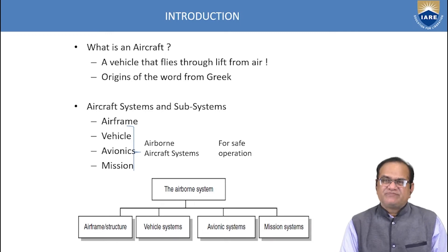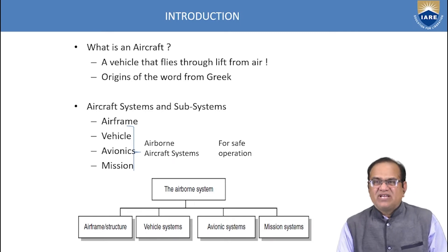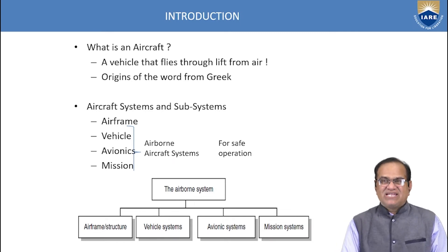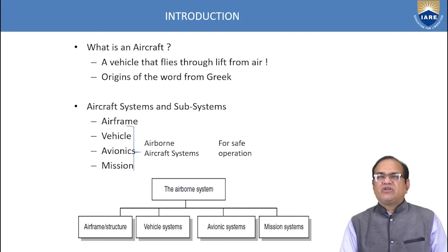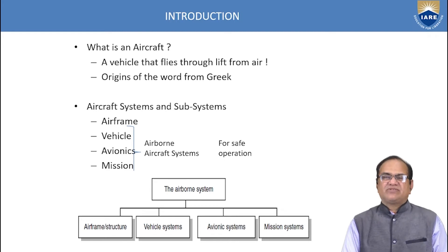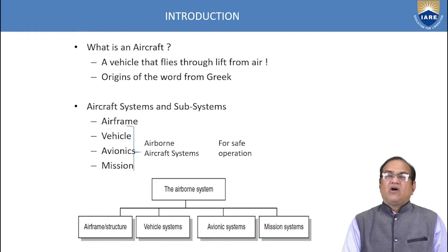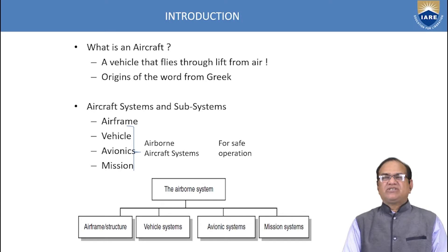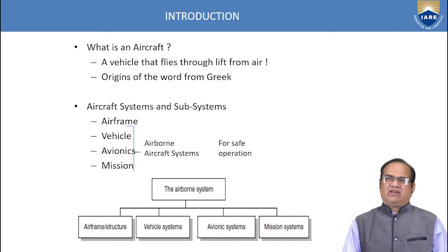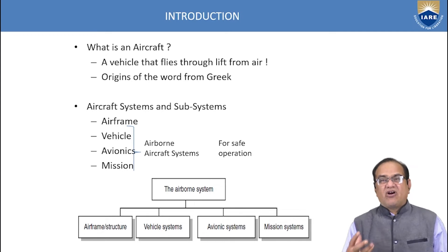In the vehicle system we have the engine system, flight control system, hydraulic system, pneumatic system, and electrical systems — all come under the vehicle system. The avionic system refers to electronics for aviation — the electronics used for aircraft, missiles, spacecraft, helicopters, or any flying vehicle.